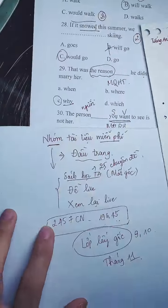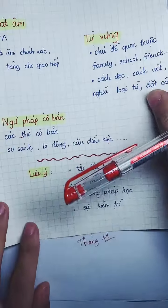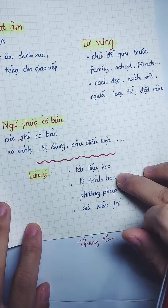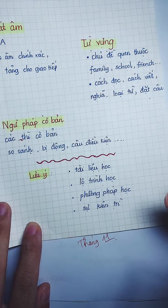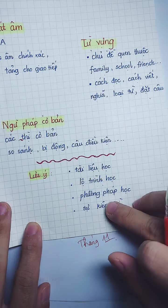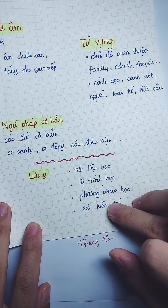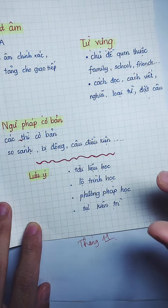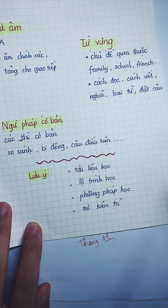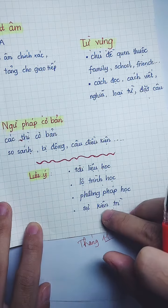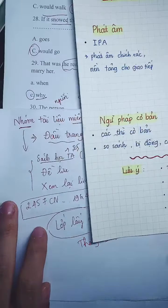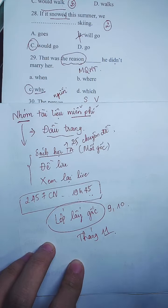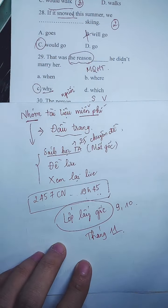Lớp lấy gốc của cô đáp ứng tất cả yêu cầu: tài liệu do cô biên soạn, lộ trình học cô đưa ra, phương pháp dạy giúp lấy gốc chắc chắn, và có nhóm học tập để trao đổi, chia sẻ, hỏi đáp. Sau 4 tháng rưỡi bạn sẽ lấy được gốc — cấp 2, cấp 3, đại học hay đi làm đều được.